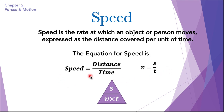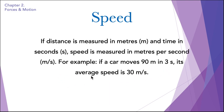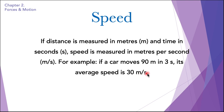This is the equation for speed. If distance is measured in meters and time in seconds, speed is measured in meters per second. For example, if a car moves 90 meters in 3 seconds, its average speed is 30 meters per second. We divide 90 by 3 and get 30 meters per second, which is the speed of the car.